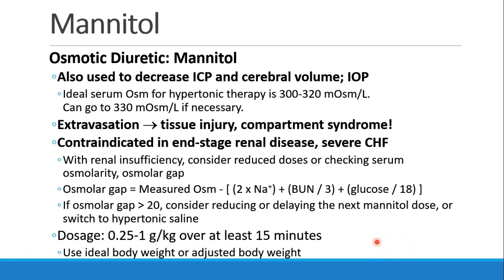Mannitol is contraindicated in patients who have end-stage renal disease or severe congestive heart failure. If kidney function is compromised, you should use mannitol carefully. Consider starting with lower doses or checking their serum osmolarity or their osmolar gap. The osmolar gap is calculated by measuring the serum osmolarity — which is a normal lab test — and then subtracting from it the osmolarity due to the most common osmolar substances in the blood: sodium, blood urea nitrogen, and glucose. If the osmolar gap is already high, like more than 20, it may be inappropriate to give more mannitol. At that point, you would consider reducing your next dose, delaying it, or switching to another substance like hypertonic saline. In normal patients, our dose of mannitol is somewhere between 0.25 to 1 gram per kilogram. I would recommend giving it over at least 15 minutes, and at higher doses, giving it over 30 to 60 minutes would be reasonable. We should use ideal body weight or adjusted body weight in calculating these doses.